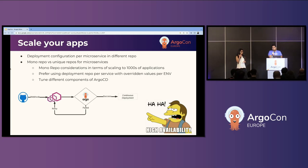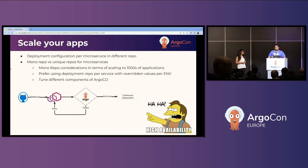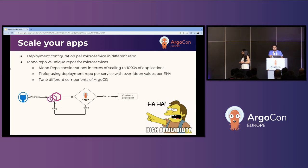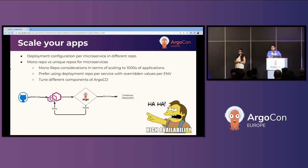When we dug deeper into this issue, having chats with the community and going through the code, we realized that the manifest-generate-path annotation — which helps to sync only a single application — only works when you are using a webhook-based approach. If you use Git-based polling, there is a substantial difference in the logic Argo CD uses: it checks if the HEAD has changed and then tries to reconcile all applications residing in your Git repository. You can imagine that around 500 applications were getting reconciled every three minutes, which was causing a lot of trouble.